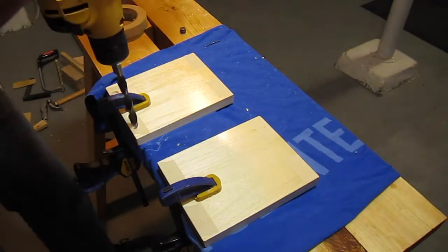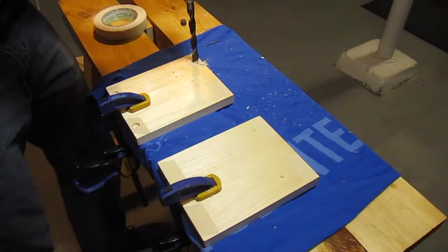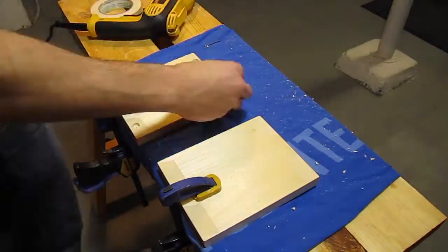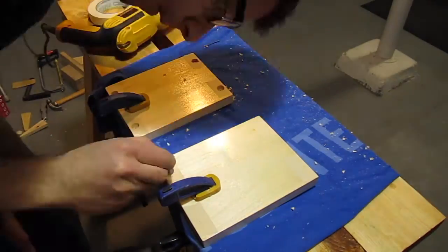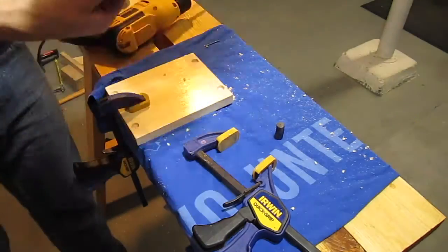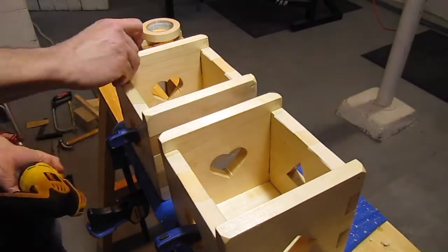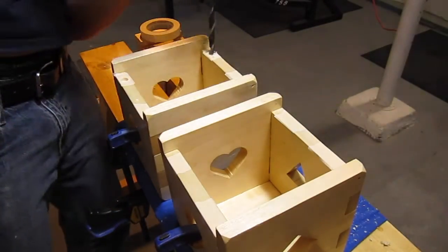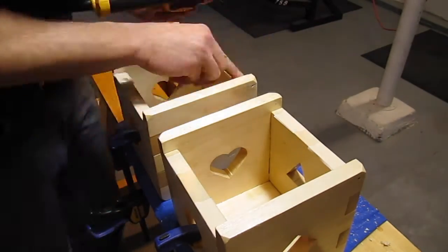I made new lids, this time using magnets to hold them on. I carefully drilled matching holes in the boxes and lids. The depth of the holes was important, so I really took my time. I wanted the magnets to just barely protrude from the surface, so that when the lid was put on, the magnets would make direct contact with each other.